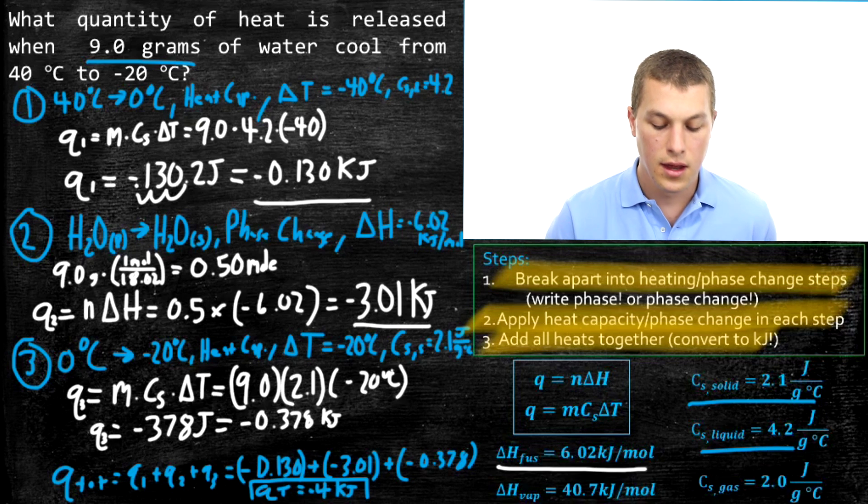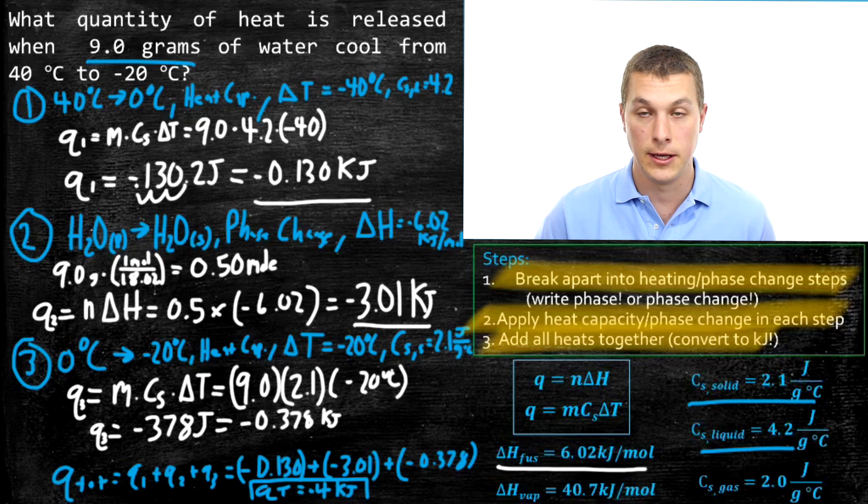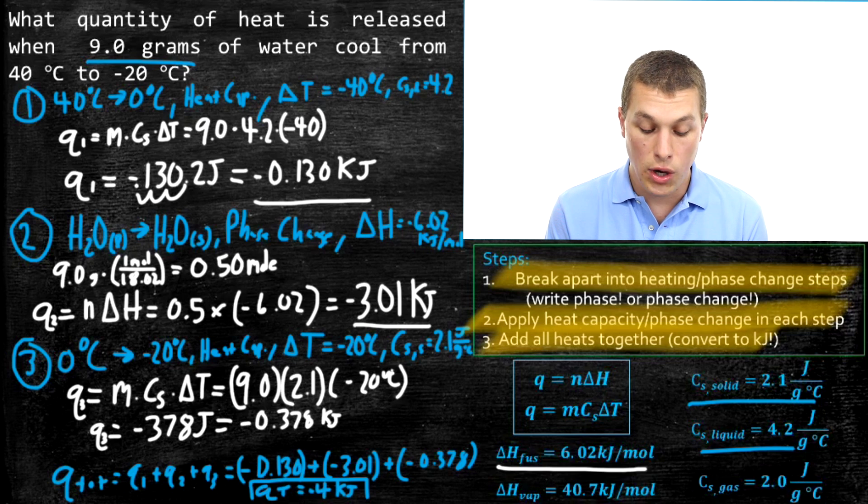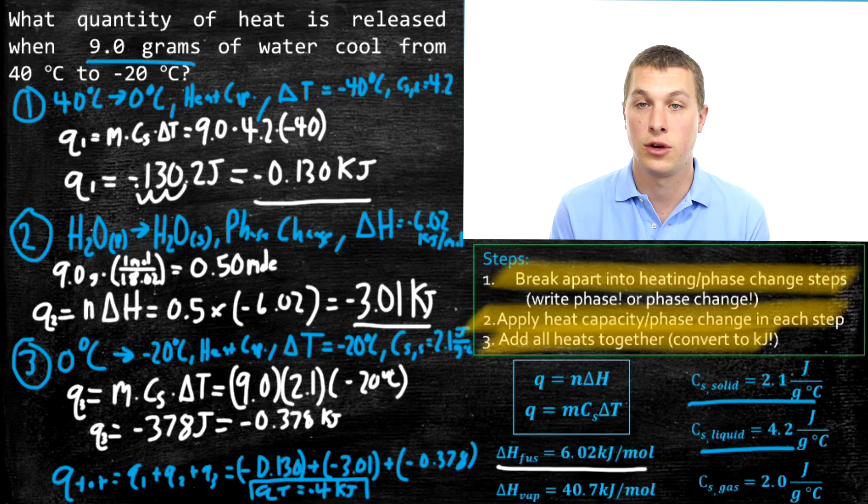What this tells me is that if I cool water, nine grams of it, from 40 degrees Celsius to minus 20 degrees Celsius, that gives off four kilojoules of heat. Whenever you're doing a heating curve, that takes heat. Whenever you're doing a cooling curve, that gives off heat. If you can think carefully about the phase changes that you're going to be going through when you're heating or cooling, you just have to break apart this problem into heat capacity steps and into phase change steps. When you add all those heats up, you get the total heat change.